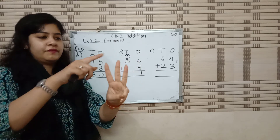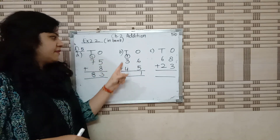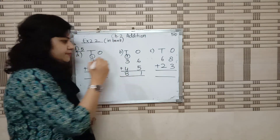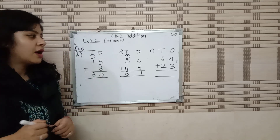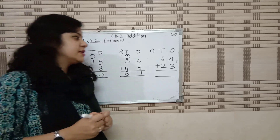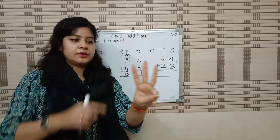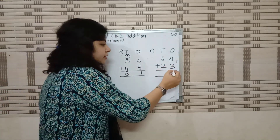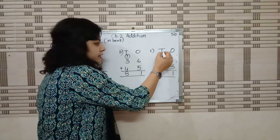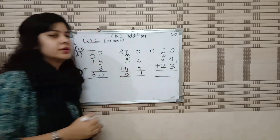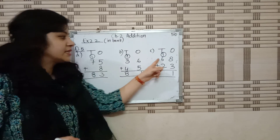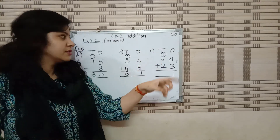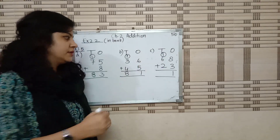After 4: 5, 6, 7. Then 7 plus 1 is 8. Now 8 plus 3: keep 8 in our mind, 3 on our fingers — 9, 10, 11. Write 1 over here and 1 carry forward. 6 plus 2: 7, 8. Plus 1 carry: 9.